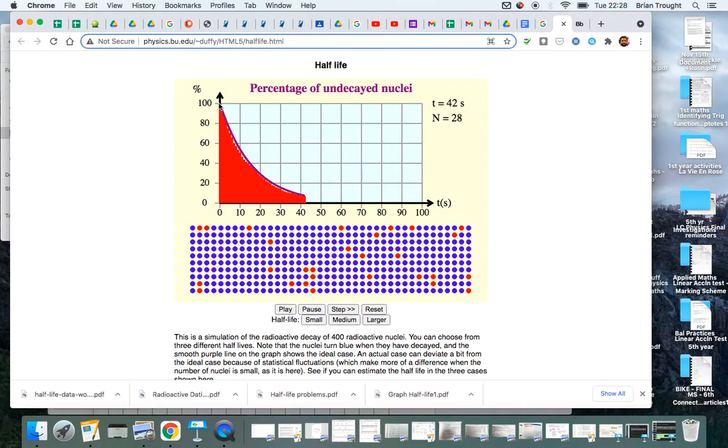And we can see there that to go from 100 dots down to 50 took about 10 seconds, according to this. So then to go from 50 to 25 would also take 10 seconds, to go from 25 to 13 would also take 10 seconds.